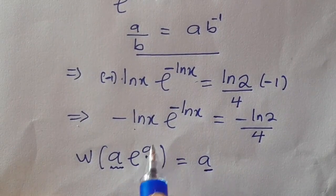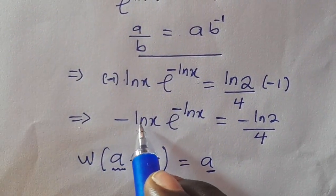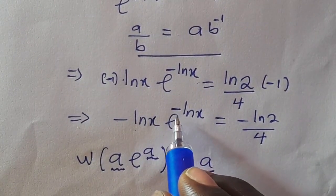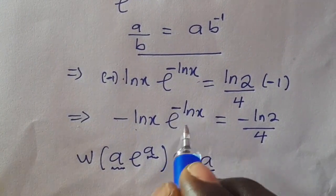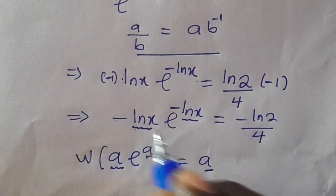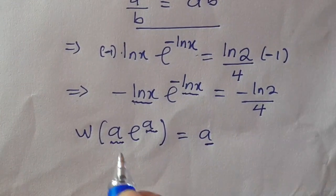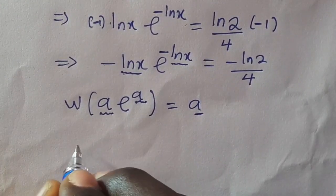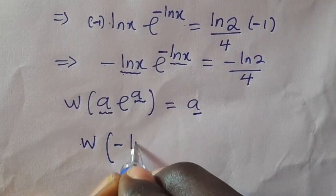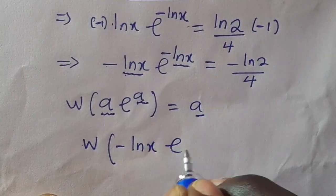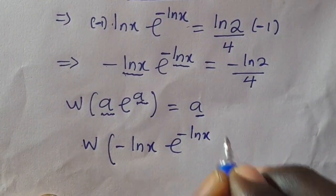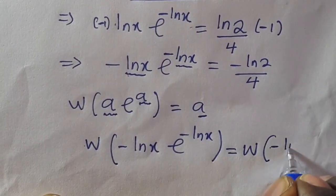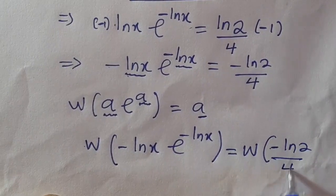That is, the power and the base must be the same. Thank God that we have minus ln(x) in the exponent and minus ln(x) in the coefficient — they are the same. So therefore, we can apply Lambert's W function, and we are going to have: W of minus ln(x) times e raised to power minus ln(x) equals W of minus ln(2) divided by 4.